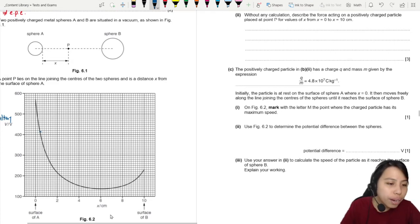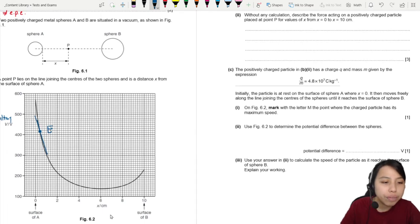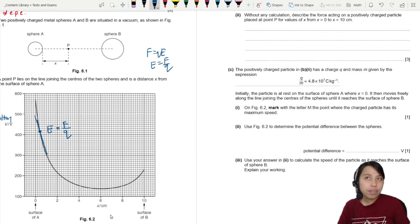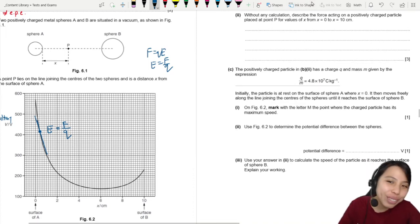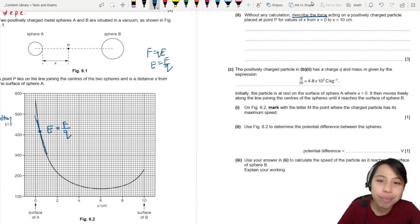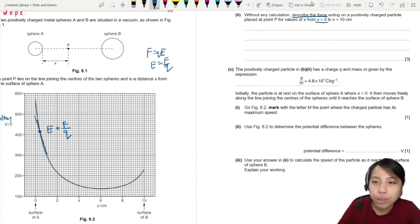So it means if I find the gradient, let's say here at this point. Hey, look, there's a straight line, that's my electric field. But if I want to find the force, I just take F divided by Q, because remember, F equals QE. So E equals F over Q. So I can use the gradient as a tip to tell me what the force is like. So when they ask me to describe the force, I just need to look at the gradient and talk about how the gradient is changing.